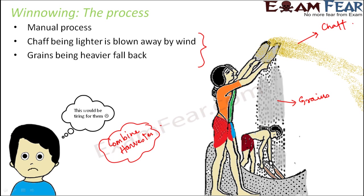So this is winnowing. We have now learned about three processes. First: hand picking, suitable only when you have bigger particles and fewer items to separate. Second: threshing, exclusively used to separate grains from stocks which are very dissimilar in structure, appearance, and size. Third: winnowing, used to separate particles where one is heavier and the other is lighter — the lighter one gets blown away, the heavier one falls back.